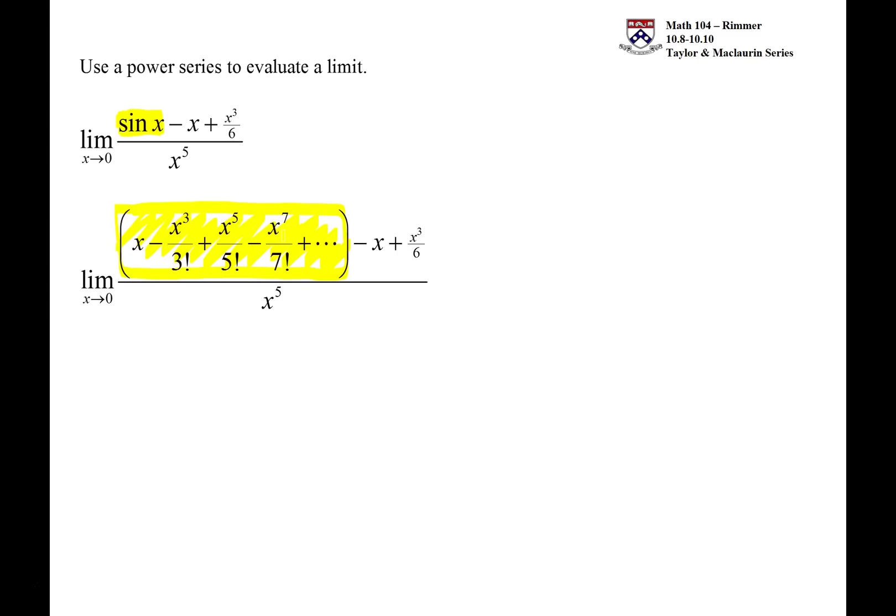There's still a minus x plus x cubed over 6 in the numerator and there's still an x to the fifth in the denominator. Now by subbing this in, what this does for us is it allows us to get some cancellation.